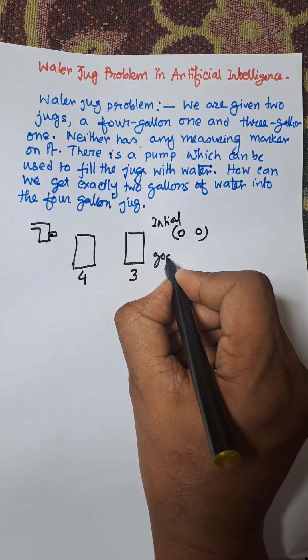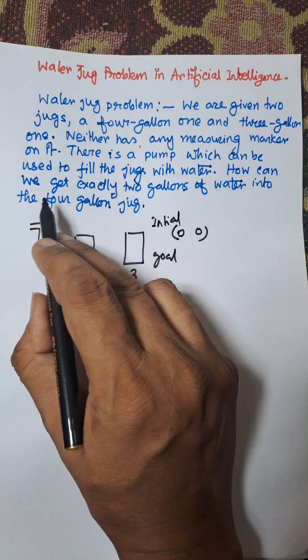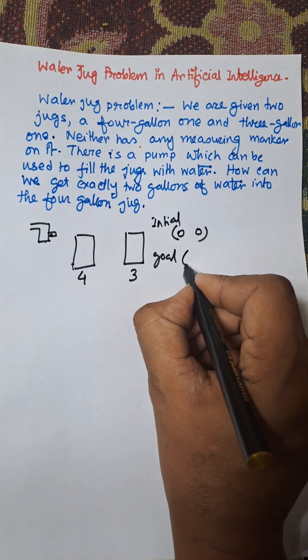And the goal state is 2,0 - exactly 2 gallons of water in the 4-gallon jug.